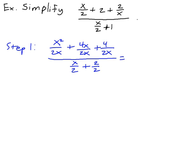Combining these so that we have one fraction on top and one fraction on bottom, we'd have x squared plus 4x plus 4 all over 2x, all of that all over x plus 2 over 2.